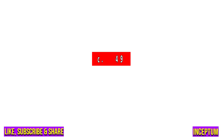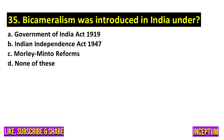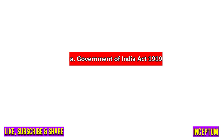Question number 35. Bicameralism was introduced in India under? In the options we have Government of India Act 1919, Indian Independence Act 1947, Minto-Morley Reforms, none of the above. And the right answer of this question is option A, Government of India Act 1919.